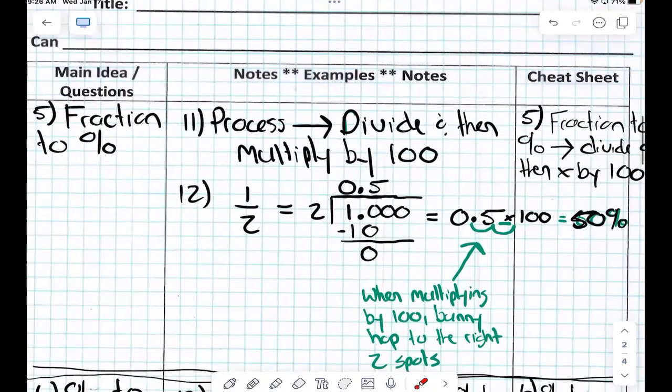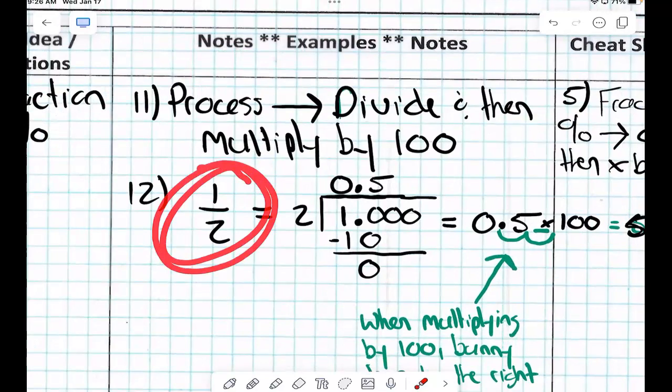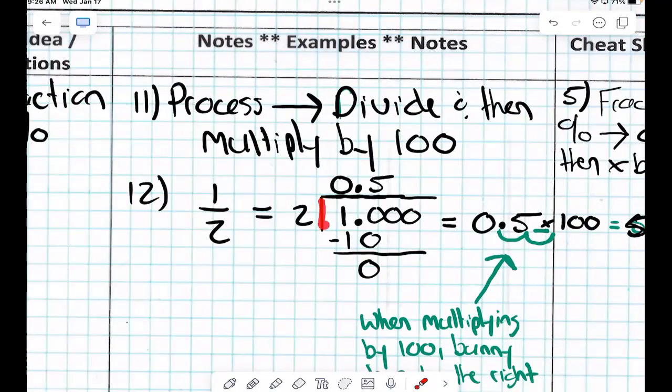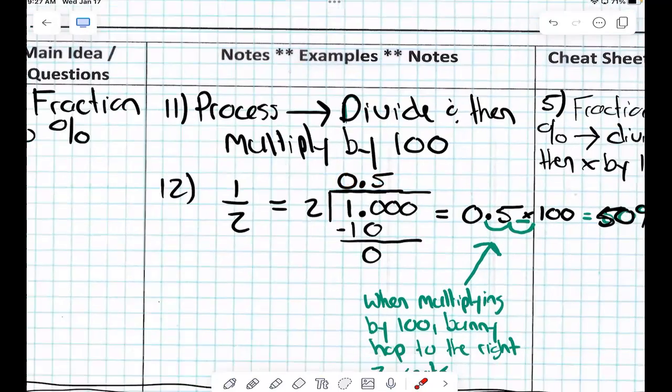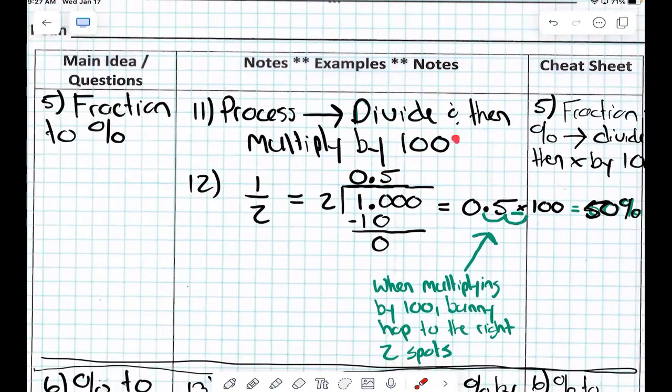Fraction to percent. Process is what? Go. So we know a fraction is nothing more than what kind of problem. So we make our division problem, right? And we got a final answer of 5 tenths, yes? But then we said in order to get to a percent, we have to multiply by,